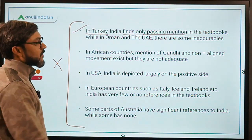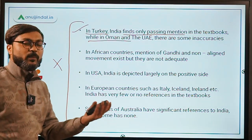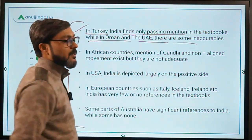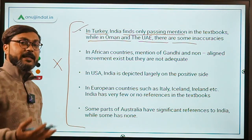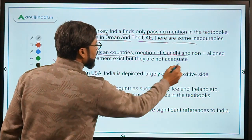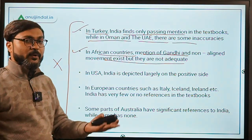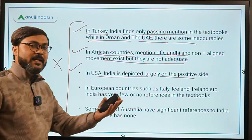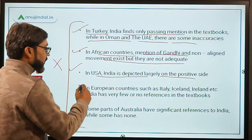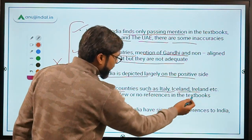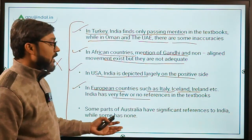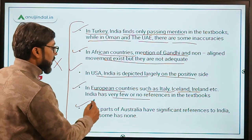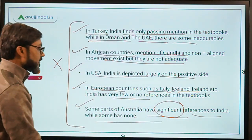From the survey findings: in Turkey, India finds only a passing mention in textbooks, and there are some inaccuracies related to India. In African countries, mention of Gandhi and the Non-Aligned Movement exists but is not adequate. In some parts of Australia, India has significant references, while other parts have none.